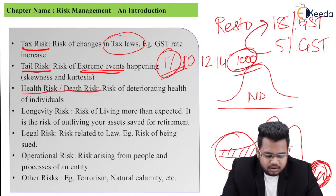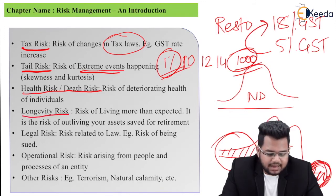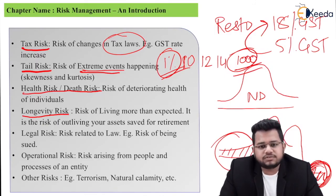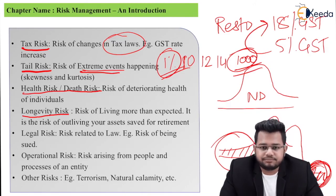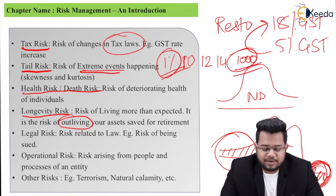H stands for health risk or death risk — the risk of deteriorating health of individuals, not companies. L stands for longevity risk: just as death risk is the risk of not living long enough, longevity risk is the risk of living longer than expected — specifically, the risk of outliving the assets you had saved for retirement.